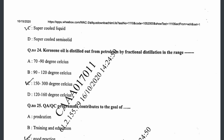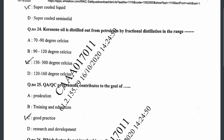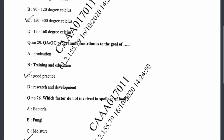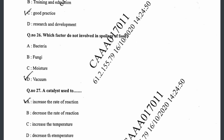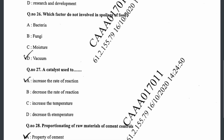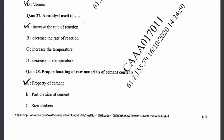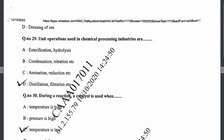Question twenty-five: QA and QC programs contribute to the goal of good practices in the industry — that is option C. Question twenty-six: the factor that does not involve in the spoilage of food — bacteria, fungi, and moisture all spoil food, but vacuum is not a factor responsible for spoilage. Question twenty-seven: a catalyst is used to increase the rate of reaction. Question twenty-eight: proportioning of raw materials of cement controls the property of cement.